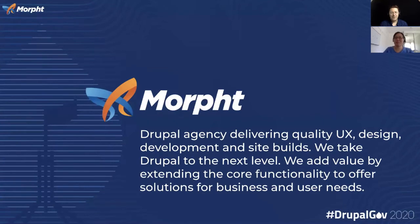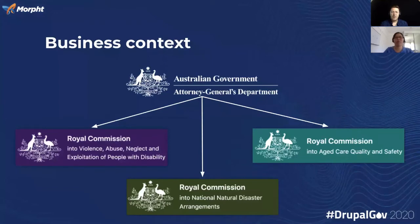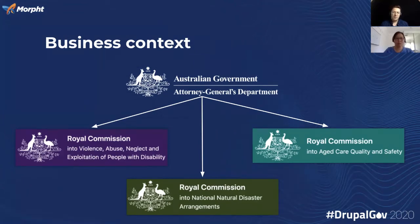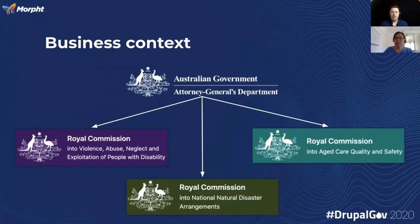We at Morft take Drupal to the next level. We deliver quality UX design and development and site builds, and we add value by extending the core functionality to offer solutions for business and user needs. This whole story rolls around a project that we delivered for the Attorney General's department in Canberra. They run and maintain a number of Royal Commission sites, and a regular request that comes to them is the update and management of batches of files tendered or presented at the Royal Commission hearings — normally batches of 20 or 200 files or more.